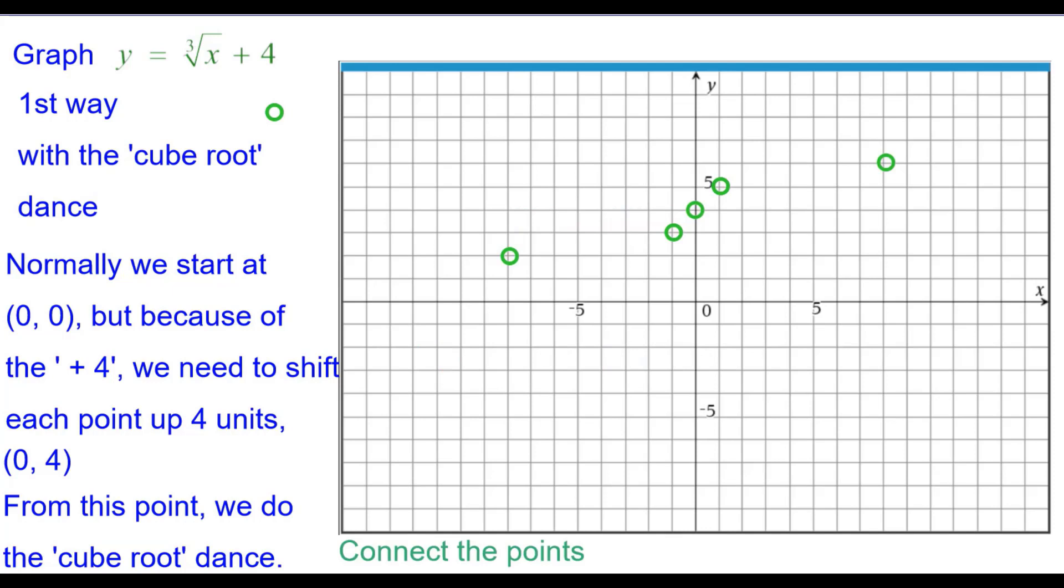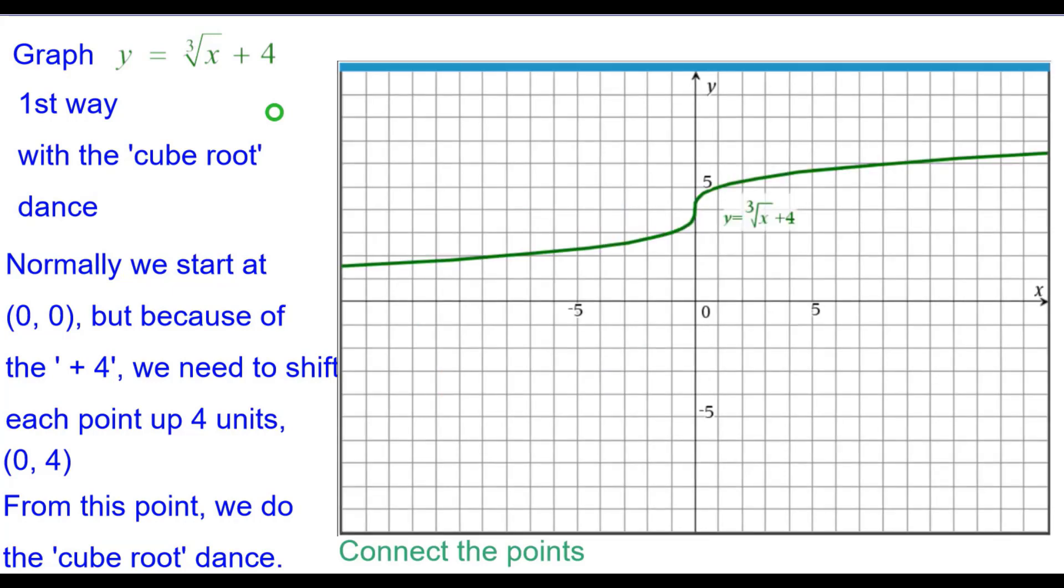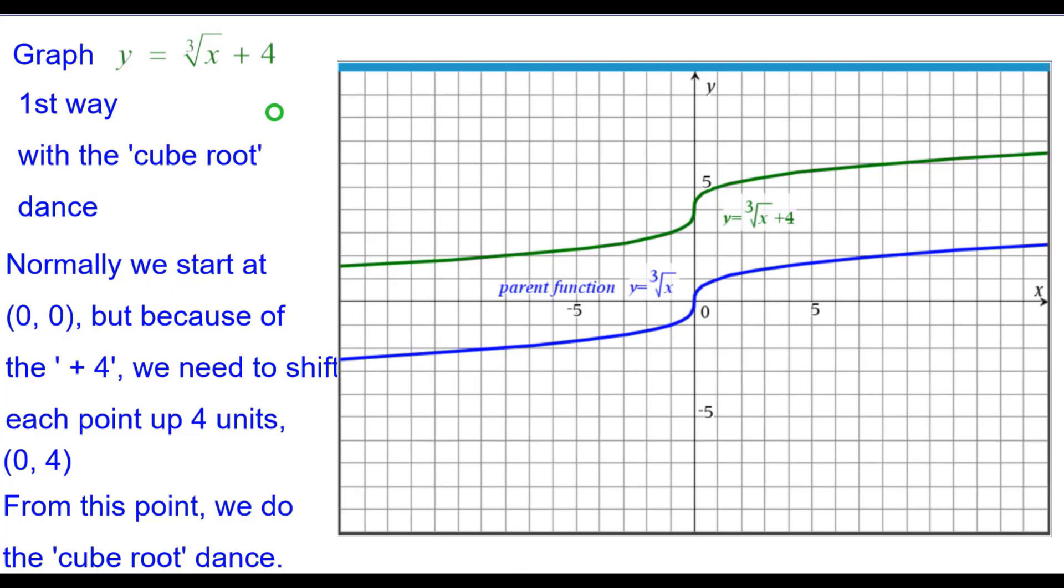Connecting the points, we get the cube root looking graph. And comparing that to the parent function, we can see that from blue to green it is moving up 4 from that point, from that point, and from actually all of the points moved up 4.